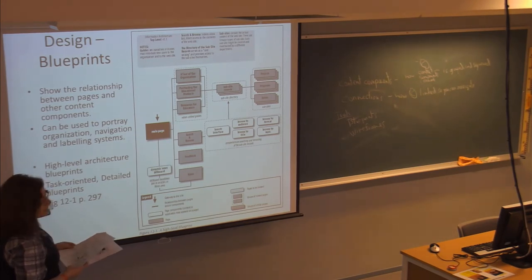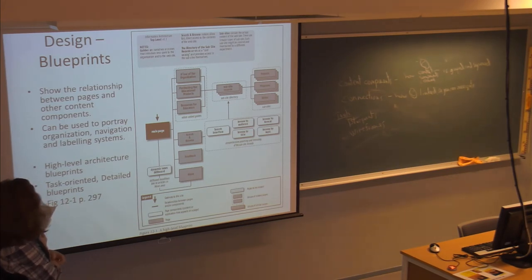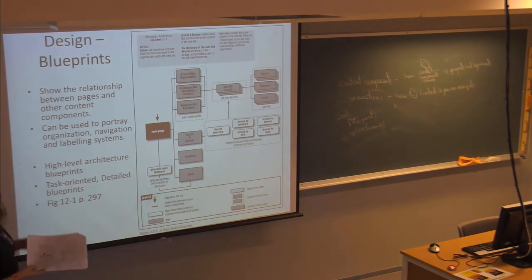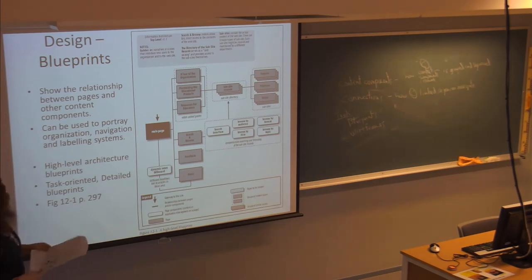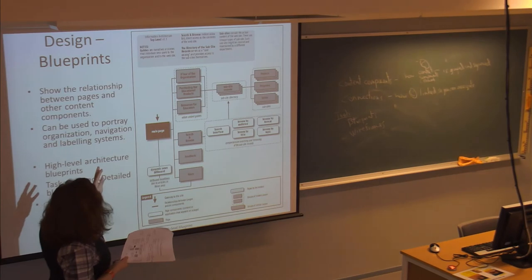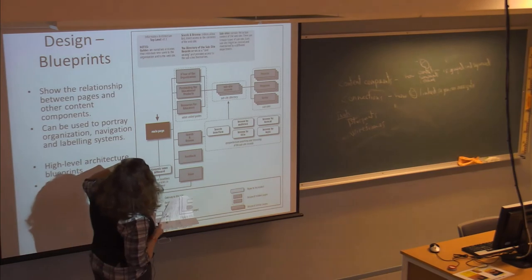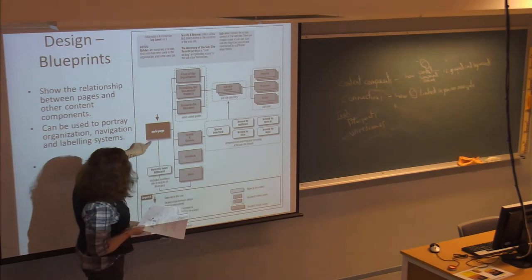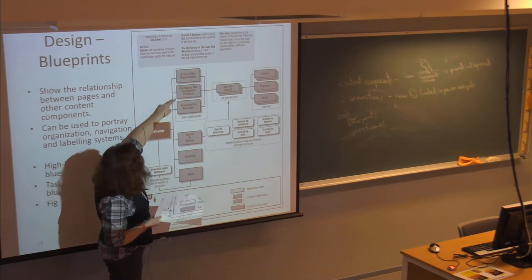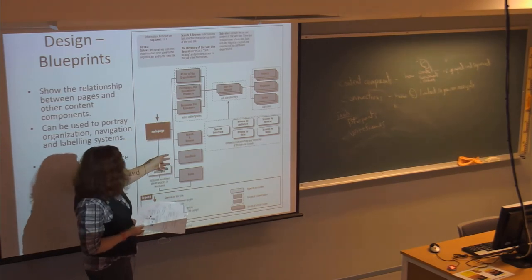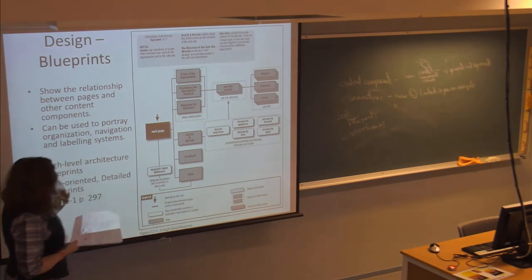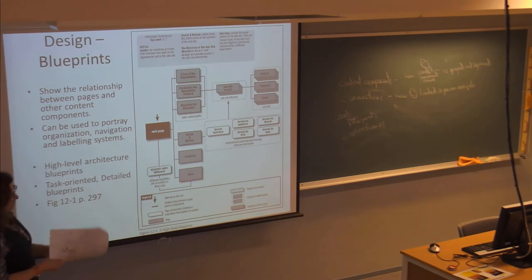A blueprint is a visual representation of where information should go — it's a high-level blueprint for someone planning how the website should group its information. They represent the main page and then different concept areas where information is grouped together. It's not exactly the pages themselves, but rather how the information on the site is going to be grouped together.